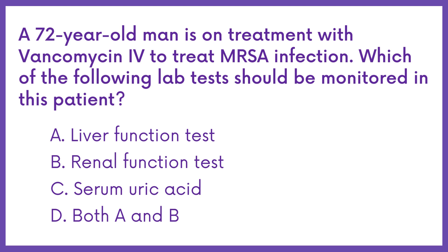A 72-year-old man is on treatment with vancomycin intravenously to treat MRSA infection. Which of the following lab tests should be monitored in this patient? Option A: Liver function test. Option B: Renal function test. Option C: Serum uric acid. Option D: Both A and B.